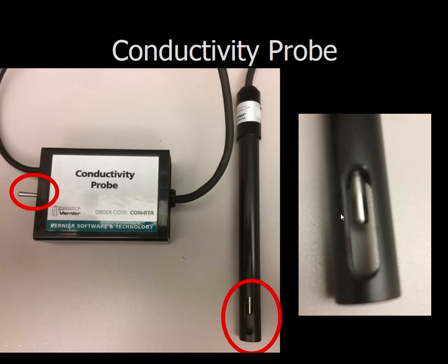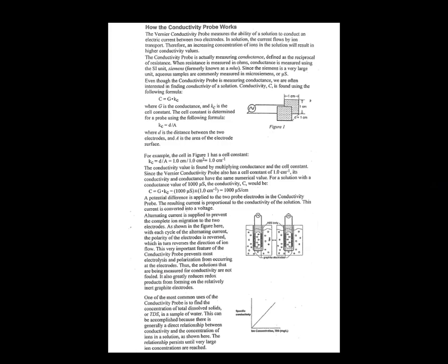Now, you can't really see it, but on either side here, there's a piece of graphite. Those are the two electrodes that will, and the solution in between will conduct electricity through. If you want to learn more about how the conductivity probe actually works, there's going to be this handout in lab, so you can read that if you'd like.